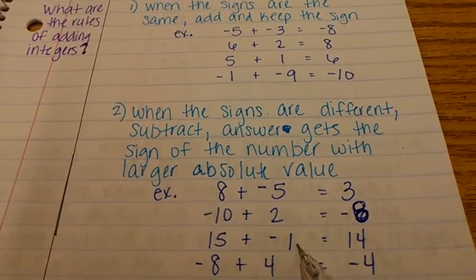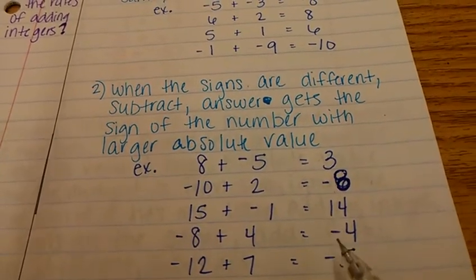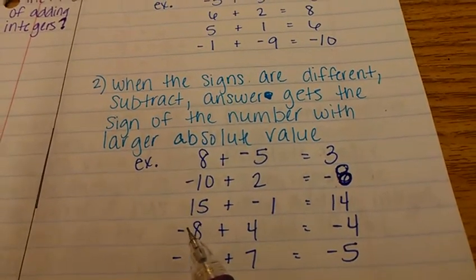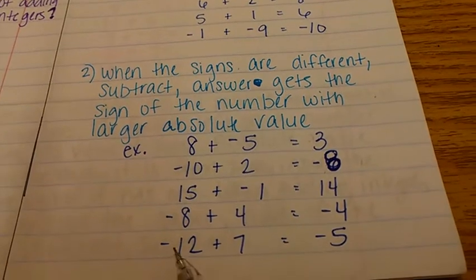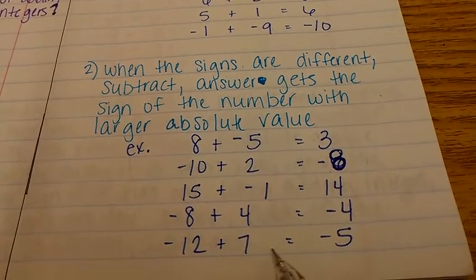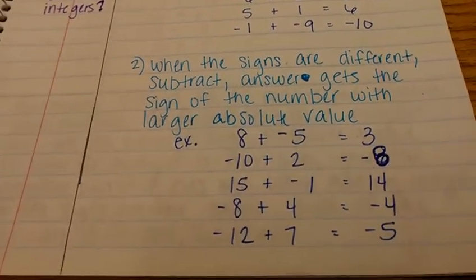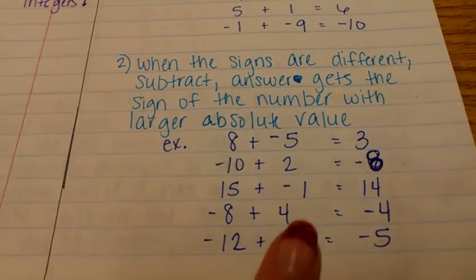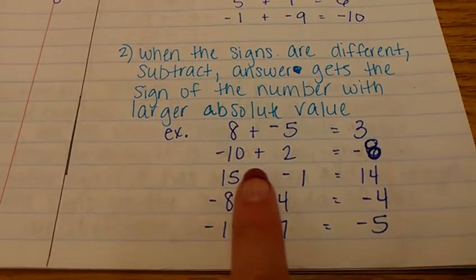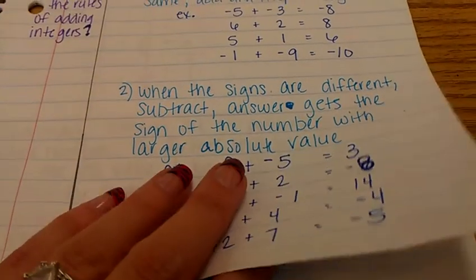Fifteen plus negative one. Fifteen is bigger, so he wins the battle. Our answer is positive. Negative eight plus four. Answer is negative four. Negative twelve plus seven. Answer is negative five. So even though it's adding integers, we actually end up subtracting on some of our problems because you've got to pay attention to the signs. When you have a positive and a negative sign, when the signs are different, you do in fact subtract.